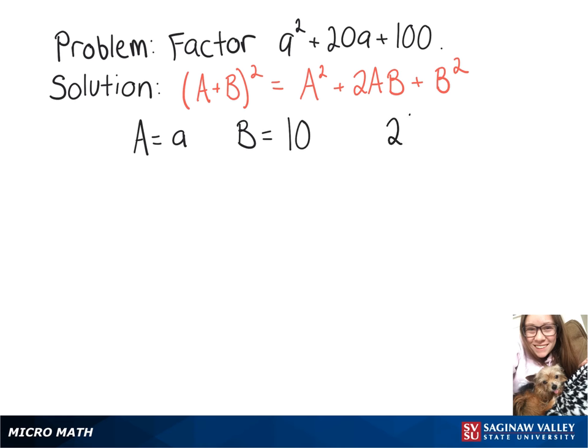Now, just to make sure that this formula works, we can do our 2ab, so 2 times lowercase a times 10, which gives us 20a.